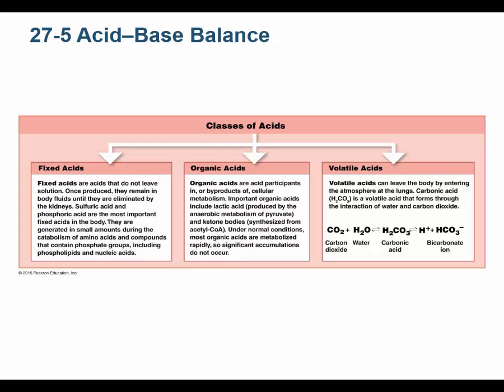There are classes of acids in our body. Fixed acids don't leave solution — they remain in the body fluids. They can be eliminated by the kidneys via urine, but they can't be eliminated by breathing and they can't be converted to other things. The fixed acids in our body — the most important ones — are sulfuric acid and phosphoric acid. We buffer them, so don't worry.